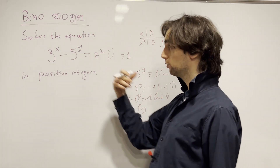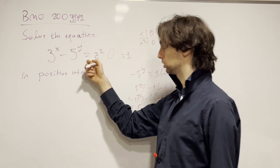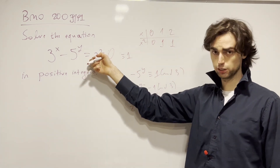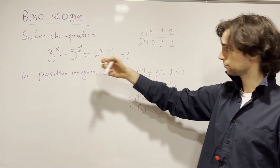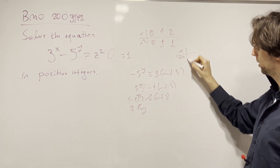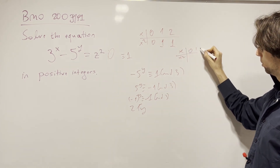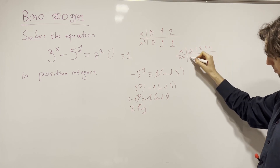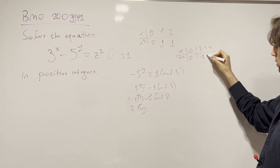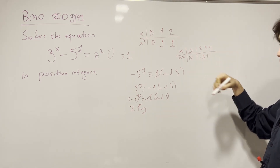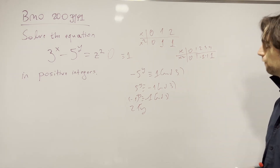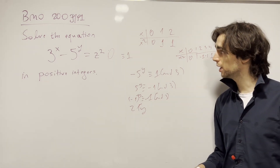Now let's look at modulo 5. We have that x squared modulo 5 can be 0, 1, or minus 1. If you look at x modulo 5 — x and x squared for x = 0, 1, 2, 3, 4 — the possible values of x squared are 0, 1, minus 1, minus 1, and 1 modulo 5.